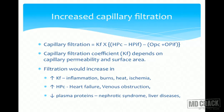Venous obstruction similarly causes edema. Decreased plasma protein — as in nephrotic syndrome — also leads to edema. In nephrotic syndrome, plasma proteins are abnormally filtered at the glomerular capillaries and excreted in urine, reducing plasma protein concentration. This decreases oncotic pressure, reducing the force opposing filtration, so more fluid is filtered out, causing edema.